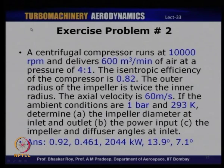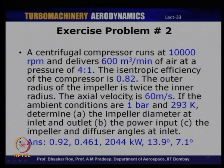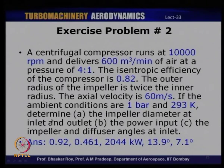Exercise Problem 2: A centrifugal compressor at 10,000 RPM delivers 600 m³/min at pressure ratio 4:1, isentropic efficiency 0.82, outlet radius twice inner radius, axial velocity 60 m/s, ambient conditions 1 bar and 293 K. Find impeller inlet diameter (0.92 m), outlet diameter (0.461 m), power input (2044 kW), and impeller angles at inlet (13.9° and 7.1°).